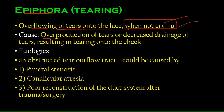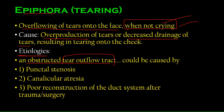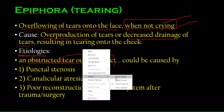What could possibly cause epiphora? An obstruction of the tear outflow tract — an obstruction anywhere in the drainage system would cause the flow of tears to stop. Let's quickly draw the drainage system: we have the puncti, then the lacrimal canaliculi, and then the canaliculi join together to a common canal.